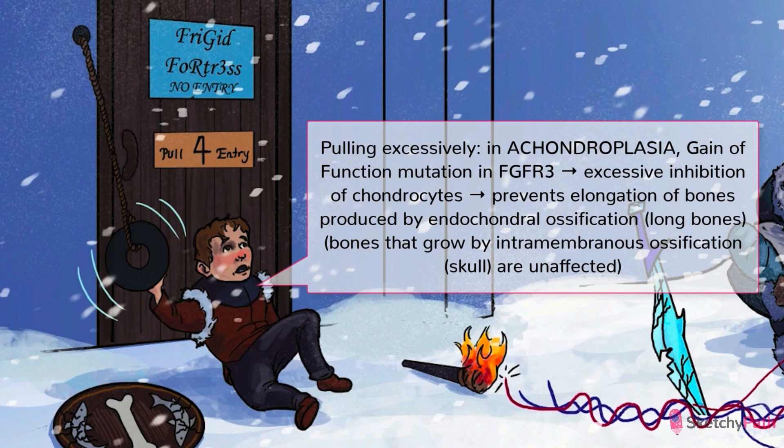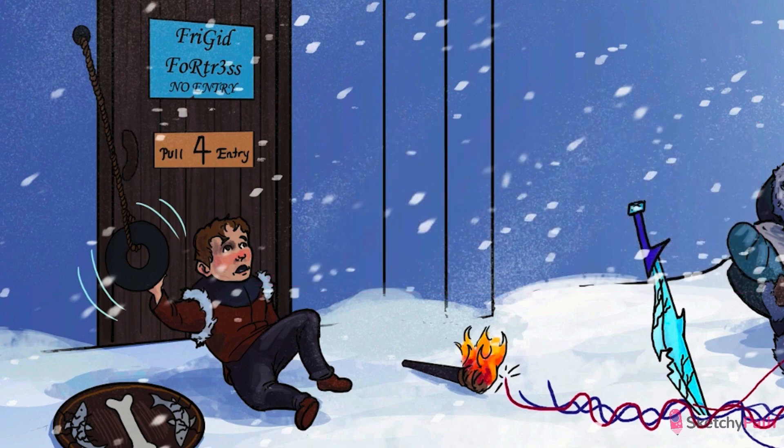FGFR3 is normally responsible for inhibiting chondrocytes, keeping bone growth in check. In the setting of achondroplasia, overactive FGFR3 causes excessive inhibition of chondrocytes, which prevents elongation of all bones that rely on endochondral ossification. Meanwhile, bones that grow by intramembranous ossification, such as the skull, are relatively unaffected.